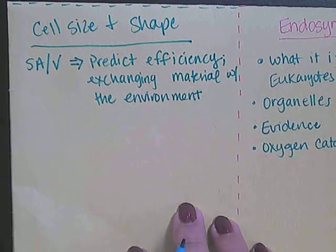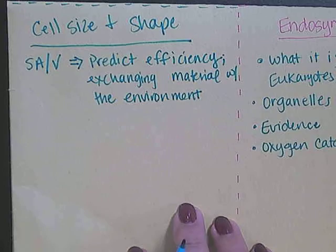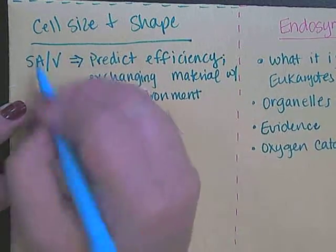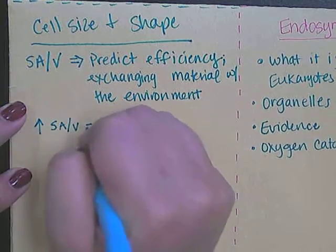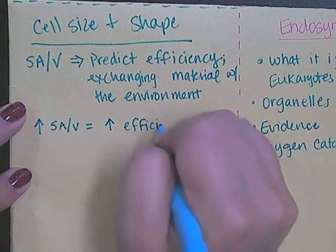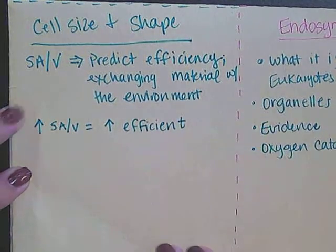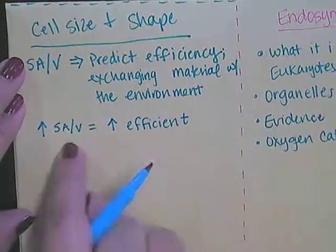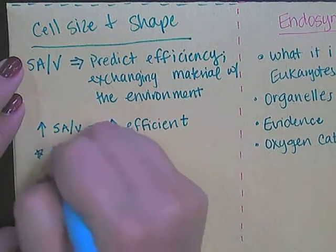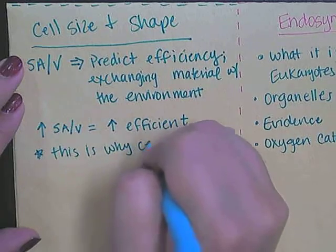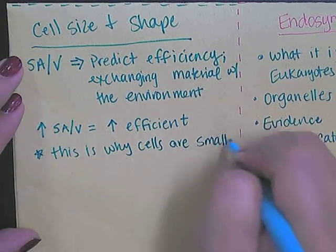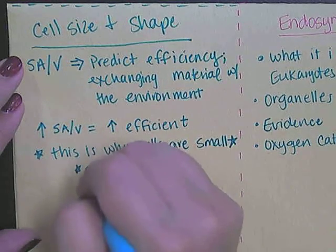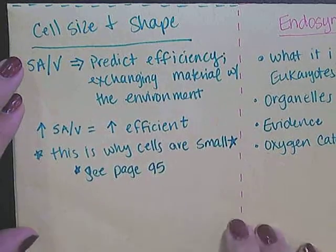The surface area to volume ratio is a way to predict that efficiency. When looking at cells, the higher the surface area to volume ratio, the more efficient a cell is going to be. On page 95, you have a graph of how the surface area to volume ratio changes as the radius of the cell increases. This relationship explains why cells are so small.